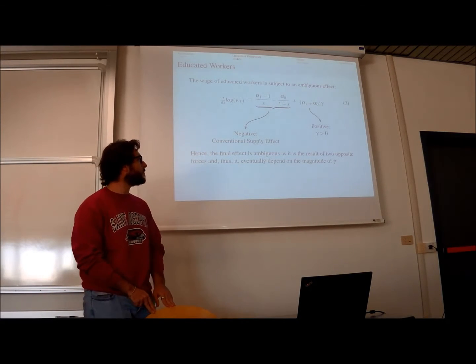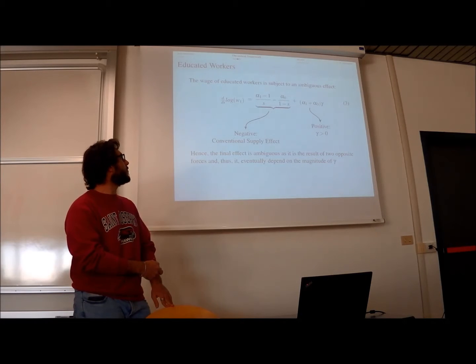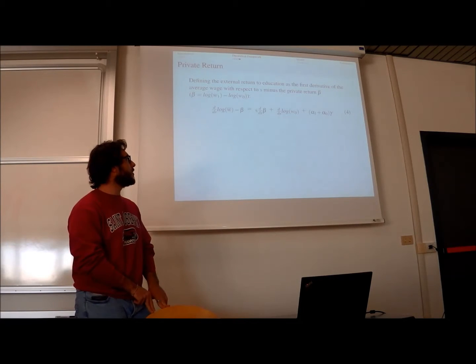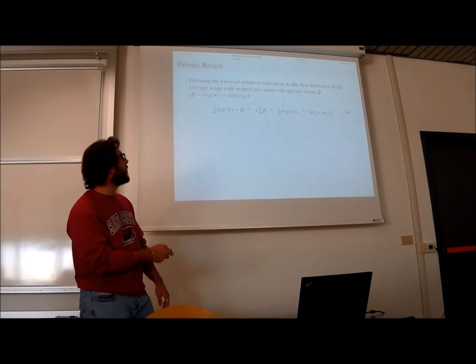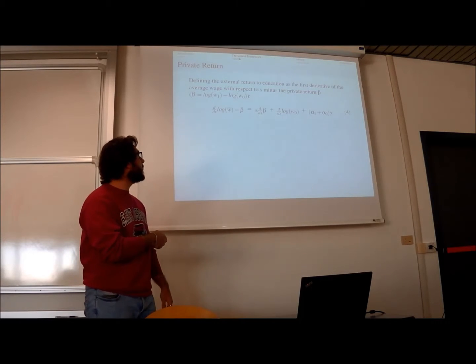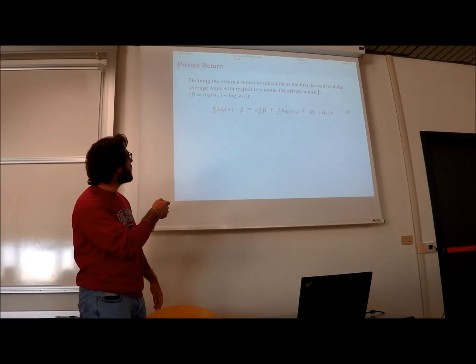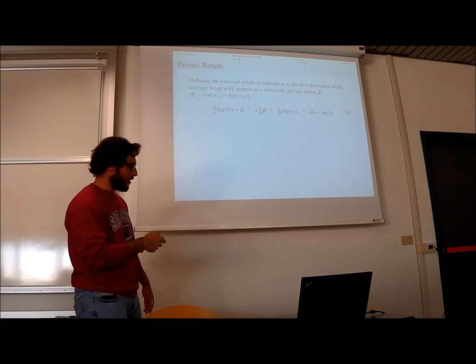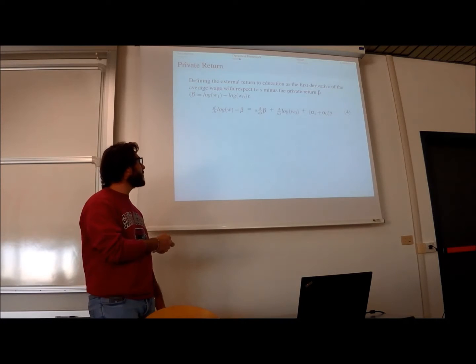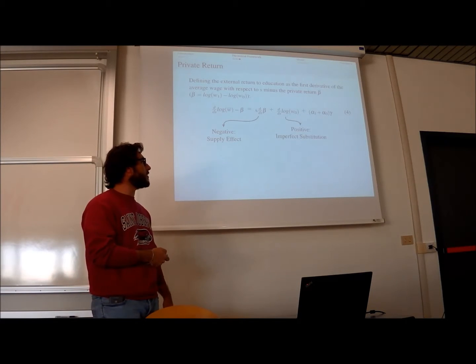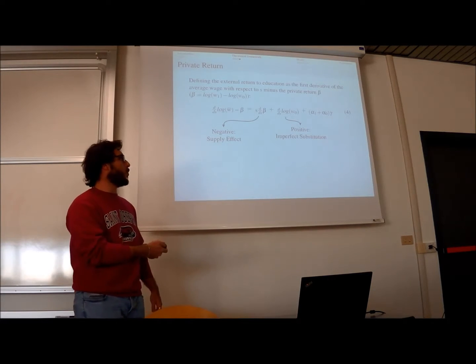To conclude this framework, we're going to analyze what happens on the external return to education, defined as the derivative of the log average wage minus the private return, which is the difference in the log wages. We see there are three effects: the first is negative, the supply effect, the second is the imperfect substitution that is positive.